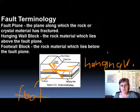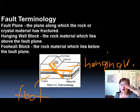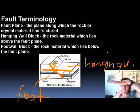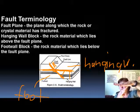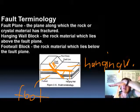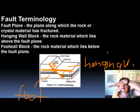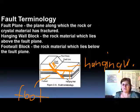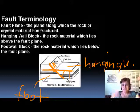So the hanging wall — I'll mark it HW — and this here is the foot wall. Whenever you have the fault line, you put the imaginary horizontal plane, look below this plane, and the fault line makes two angles: one is the acute angle and the other is obtuse. The acute angle side is the hanging wall and the obtuse angle side is the foot wall.